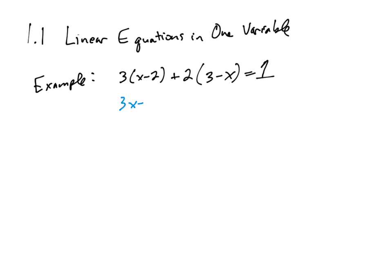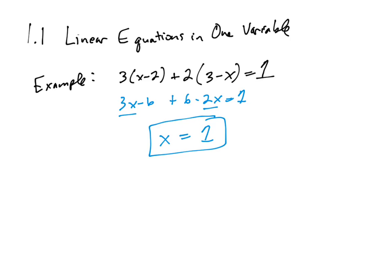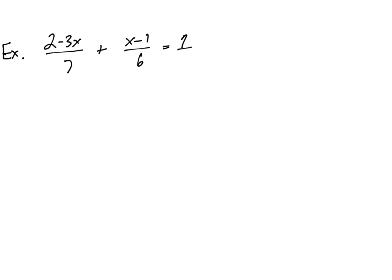To solve this, simplify the left-hand side completely and the right-hand side completely, get all the variables to one side, and then divide to get the variable by itself. The 6 and the negative 6 cancel, so we get x plus 0 equals 1. These cancel out, so x equals 1.